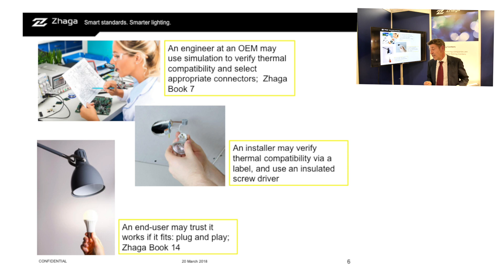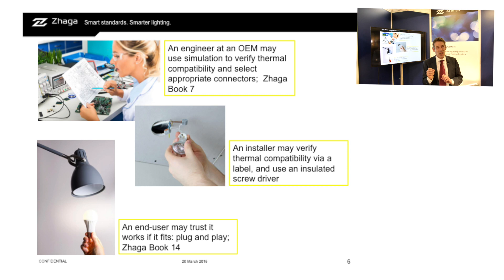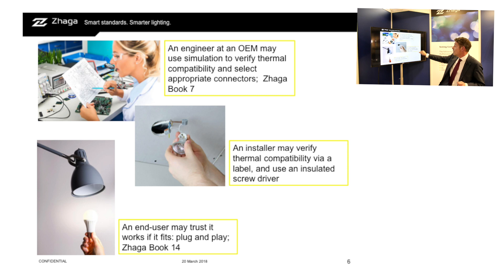For an installer at a site replacing components, there are other things at stake when thinking about interoperability. We may do checks to see if there are no incompatibilities, but for him checks must be simpler. It must be a label on a package or on a component, maybe some simple calculation — that's what is within his capability.